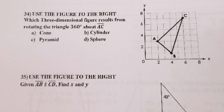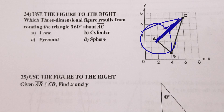Number 34: if you spin the figure around about AC — imagine spinning it like a top — it will come all the way around and make a cone. That's it for number 34.